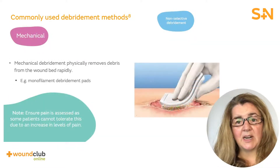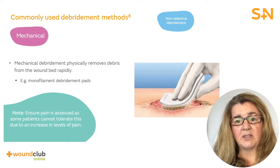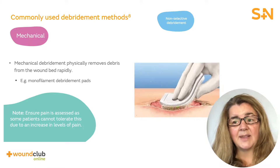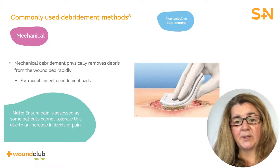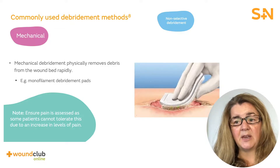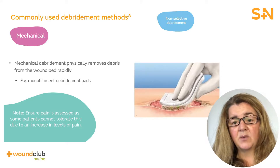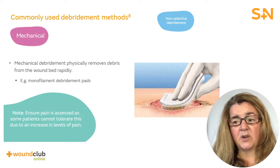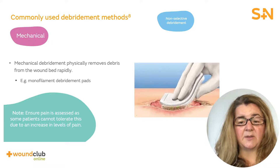Monofilament debridement pads contain a large number of polyester fibres of a specific size and thickness. The soft fleecy side of the pad is used to apply gentle cleansing action to the wound and surrounding skin area if indicated. A separate pad may be used to treat different wound areas. The monofilaments encourage the physical or mechanical removal of wound debris without damaging the tissue being treated. The wound debridement pad has been noted for its ease of use and is well tolerated by patients.